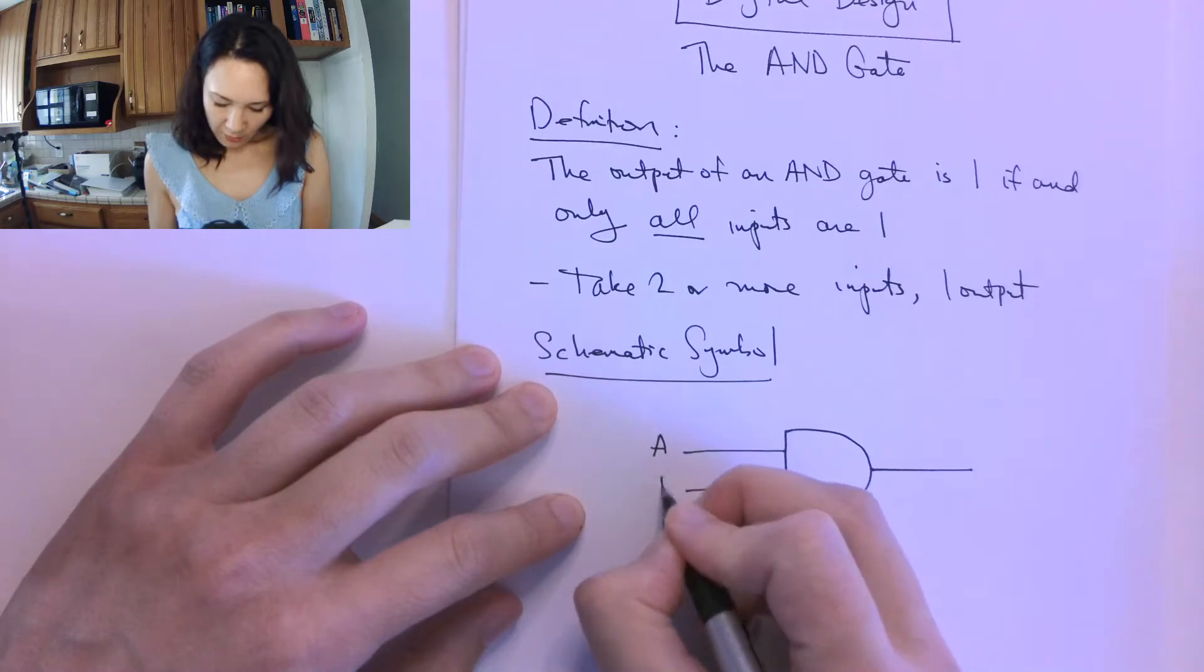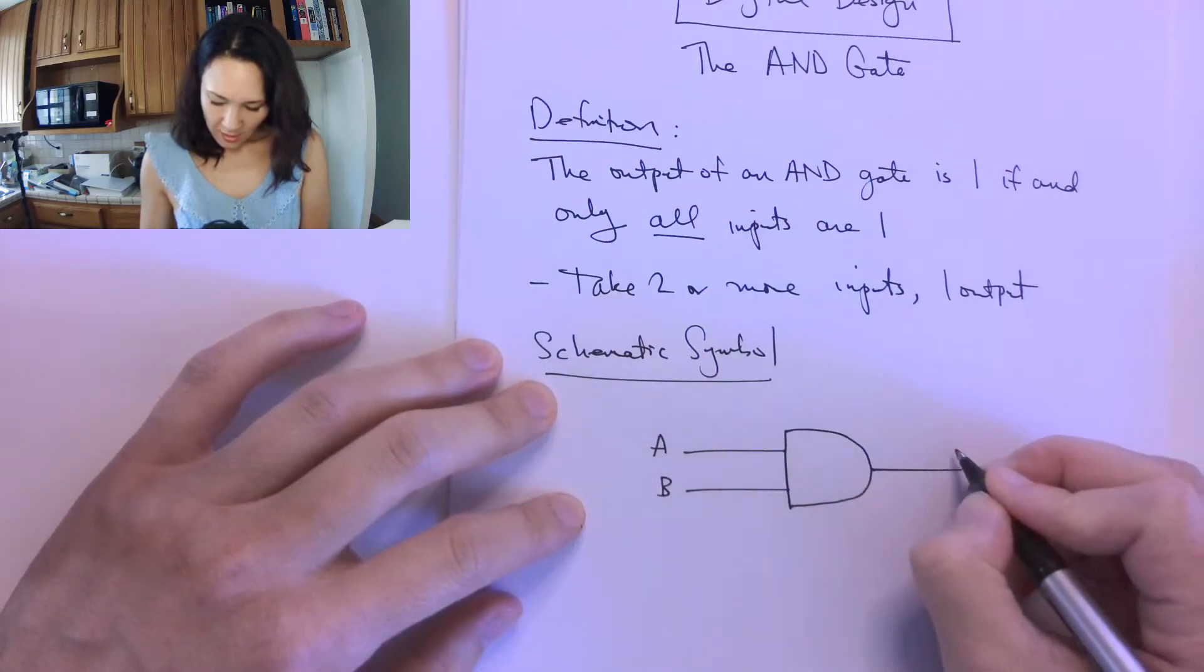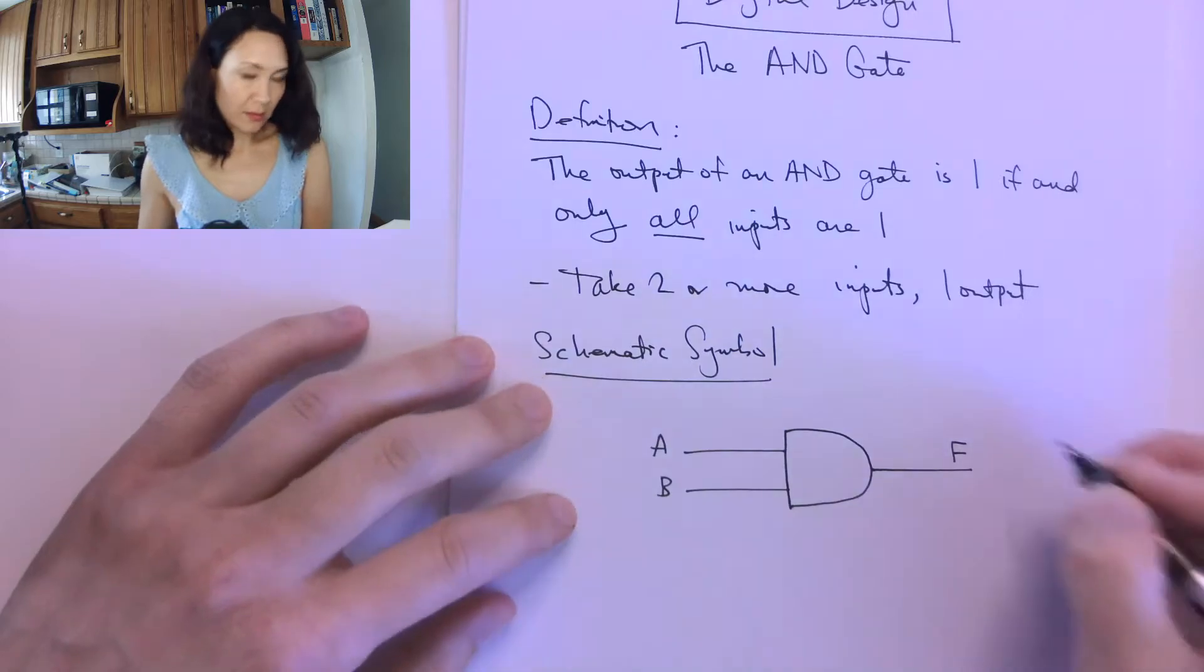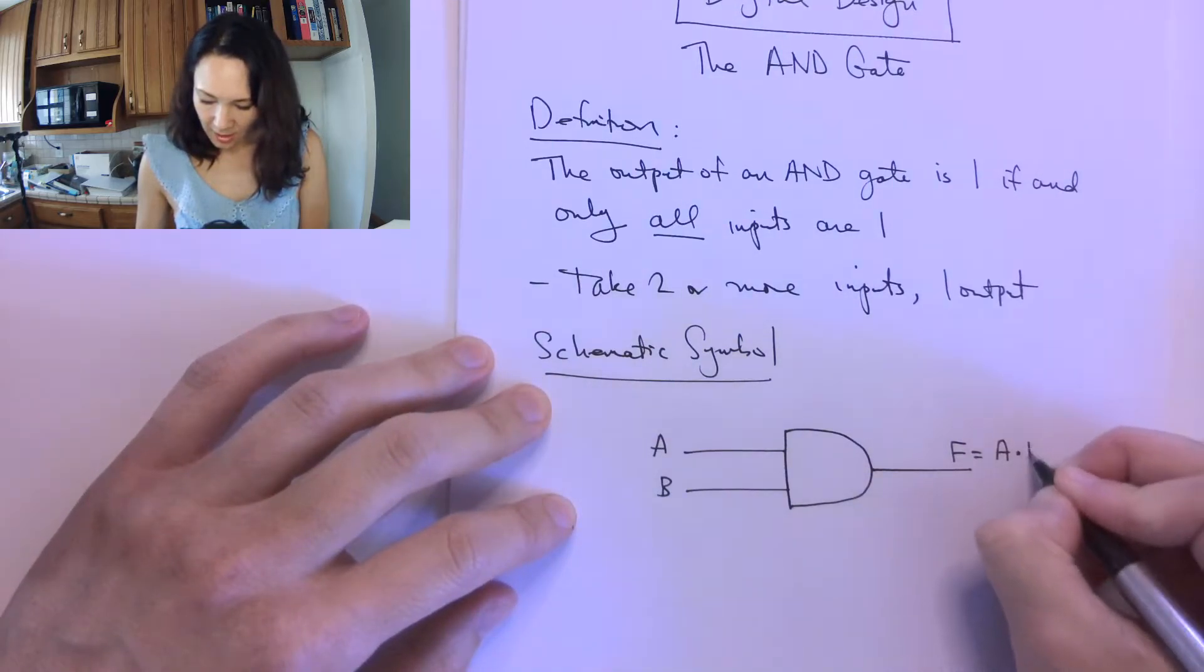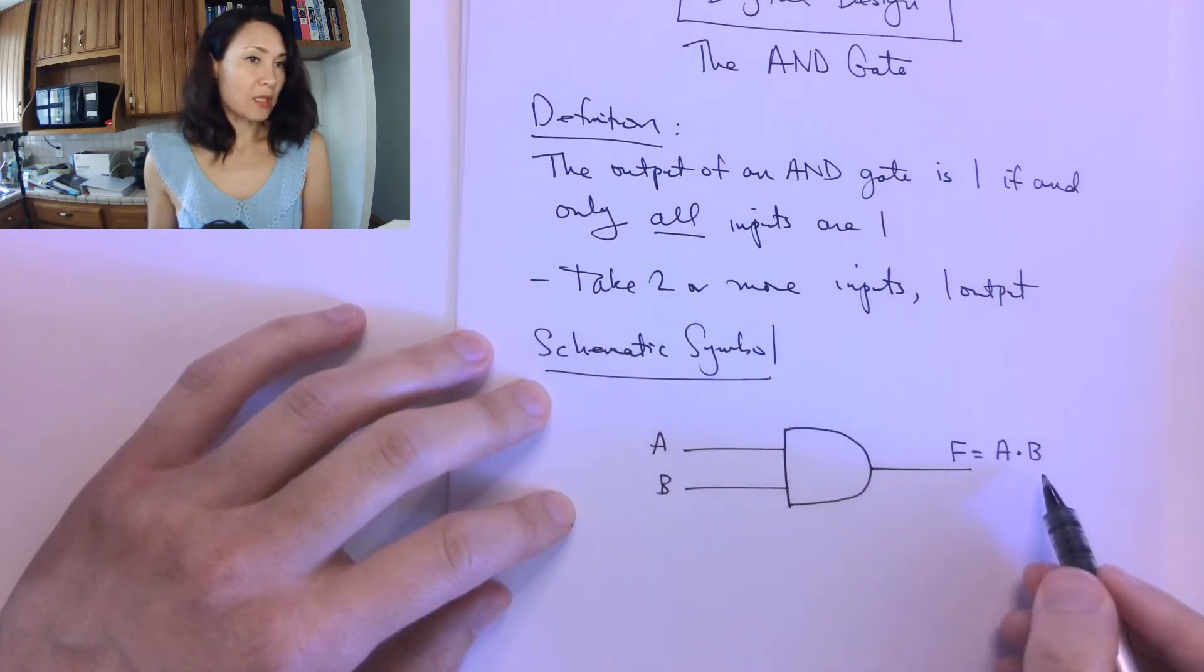So if I label my inputs A and B, I can label my output. Let's say I call it F this time. So my function, the notation is A times B,